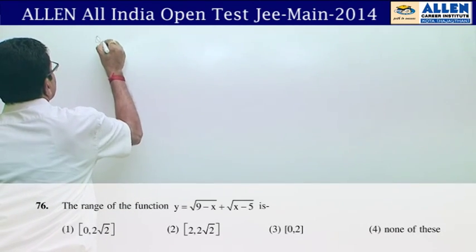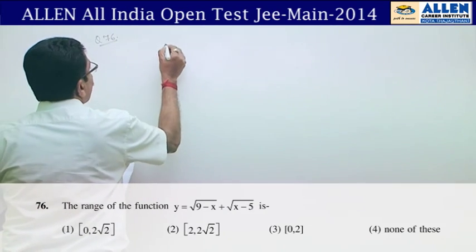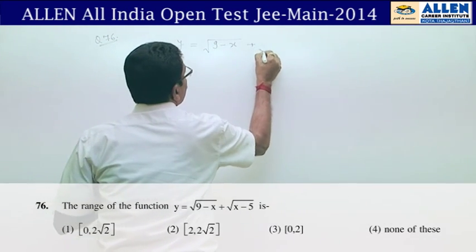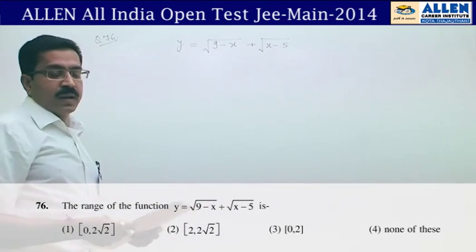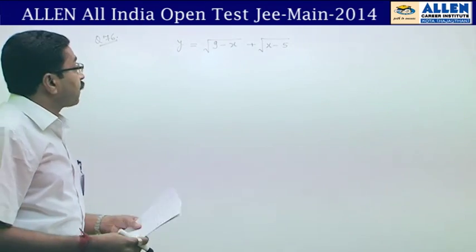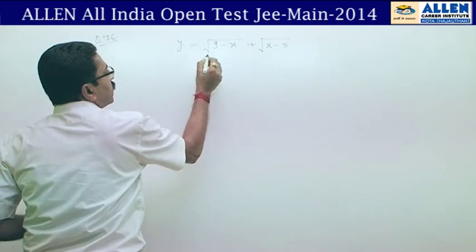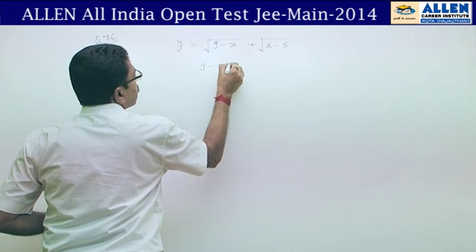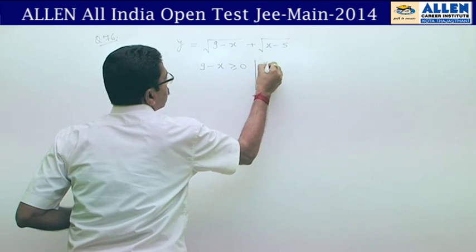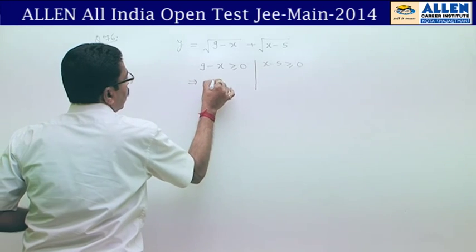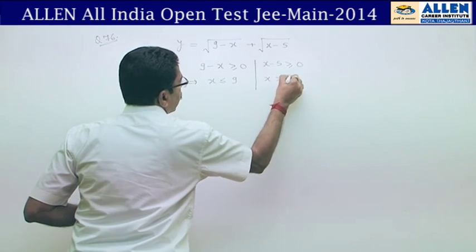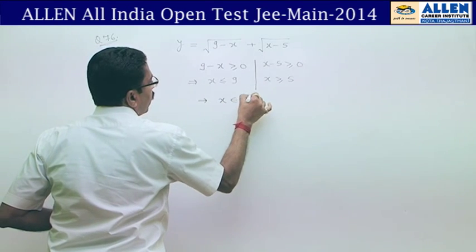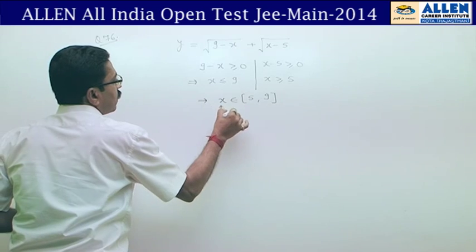Question number 76: Find the range of the function y = √(9−x) + √(x−5). We first calculate the domain. Domain conditions: 9−x ≥ 0 and x−5 ≥ 0, which gives x ≤ 9 and x ≥ 5. Taking the intersection, x belongs to [5, 9]. This is the domain of the function.